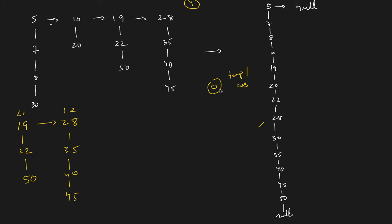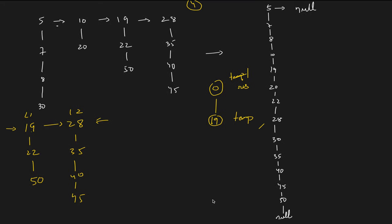First, we create a dummy node and assign it to both temporary and rest. Two variables point to the dummy node so we can track the head later. We keep two pointers — one at 19, the other at 28. As in the merge step of merge sort, we compare both. 19 is smaller, so we point temp's bottom to the node containing 19. Then we move temp forward. Since 19 has been taken, we move that pointer to the next node — 22.